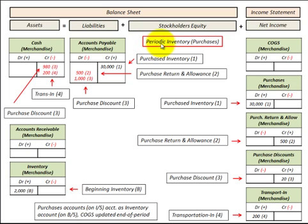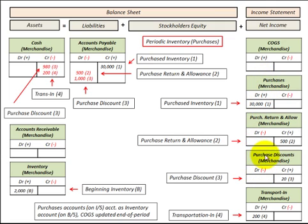We're going to look at the periodic inventory system and start with purchases. First, I want to point out the template: balance sheet accounts have assets listed under assets and liabilities under liabilities, and then we jump over to the income statement where we have net income and the income statement accounts.